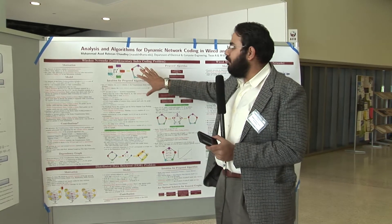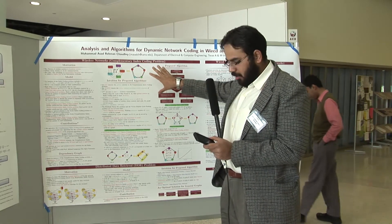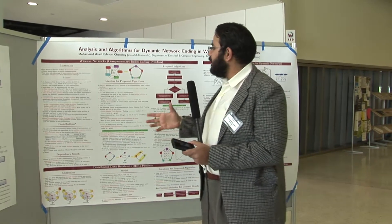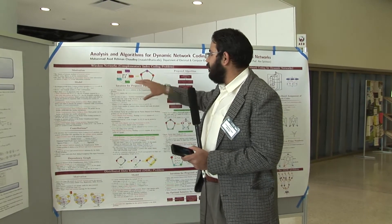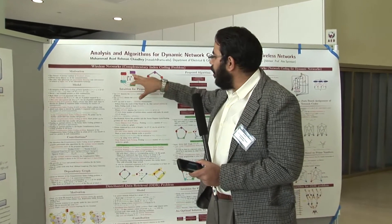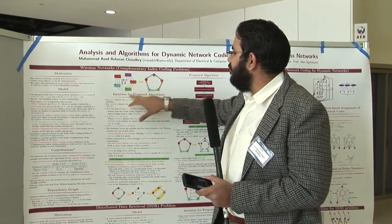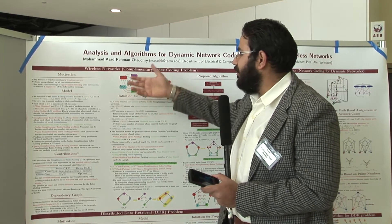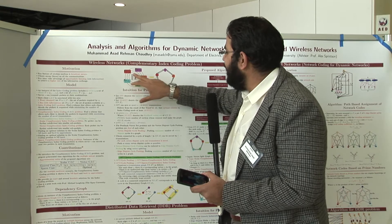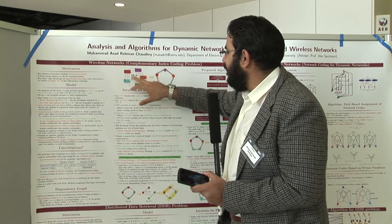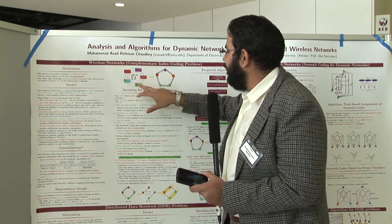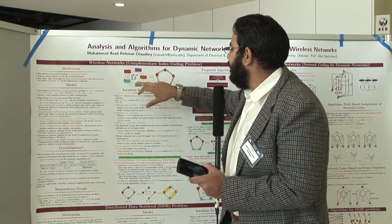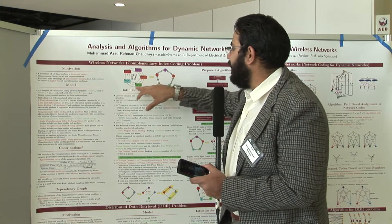In the first portion I am concentrating on wireless network coding, more specifically the complementary index coding problem. The model involves a relay or server, a bunch of clients, and each client has access to some side information and requires some packet. For example, given a server with five packets and five clients, one client wants packet one and has access to packets two and five, and similarly other clients want specific packets and have access to side information.